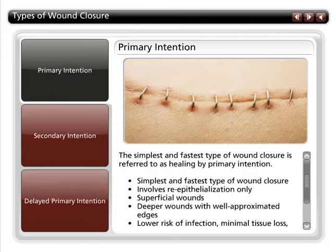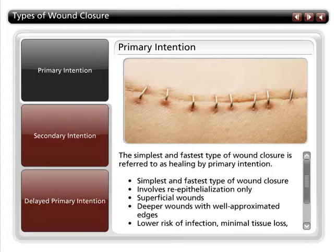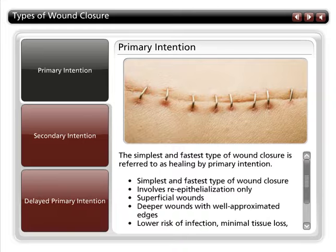The simplest and fastest type of wound closure is referred to as healing by primary intention. Primary intention involves re-epithelialization, in which the skin's outer layer grows closed. Cells grow in from the margins of the wound and out from epithelial cells lining the hair follicles and sweat glands. Wounds such as abrasions that involve only the epidermis heal by primary intention.